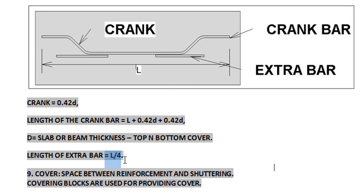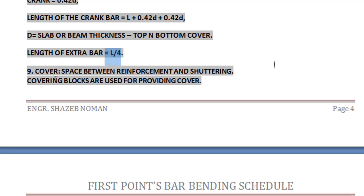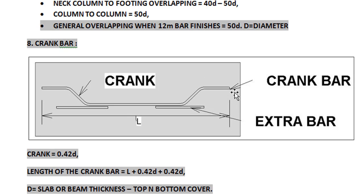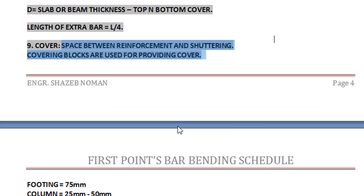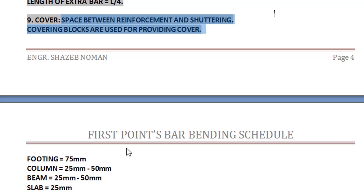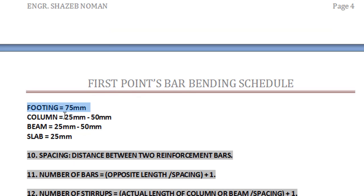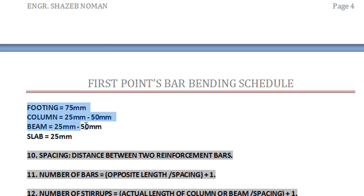Cover is the space between the reinforcement and the shuttering. To provide this space, we use covering blocks, which may be concrete or other material. Example cover values: footing — 75mm; column — 25mm to 50mm; beam — 25mm to 50mm; slab — 25mm or more, depending on the condition.